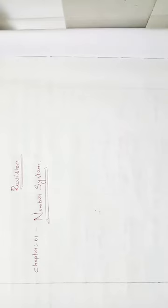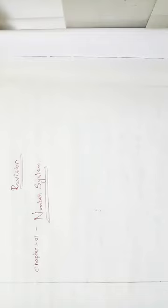Hi students, today we are going to revise chapter 1 and chapter 2 for your quarterly exam. The portions include totally six chapters: chapter 1 Number System, chapter 2 Polynomials, chapter 4 Linear Equations in Two Variables, chapter 12 Heron's Formula, chapter 14 Statistics, and chapter 15 Probability.